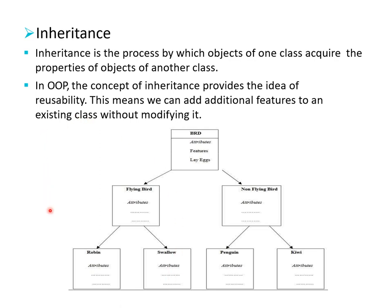The next feature is inheritance. Inheritance is the process by which an object of one class acquires the properties of an object of another class. The concept of inheritance provides the idea of reusability of code. This means we can add additional features to an existing class without modifying it. There are many types of inheritance: single inheritance, multiple inheritance, multi-level inheritance, hybrid inheritance, and hierarchical inheritance.